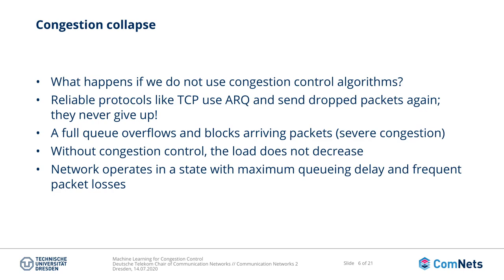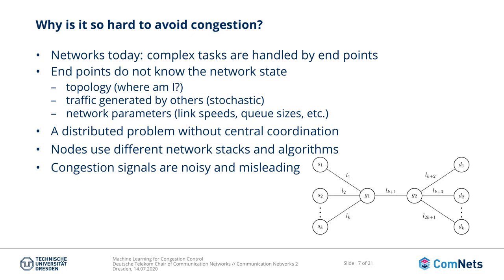But why is it actually so hard to avoid congestion in the first place? In today's networks, the complex tasks are handled by the endpoints. Most commonly a congestion control algorithm is implemented inside source nodes, and they control the sending rate. But a source node has very little knowledge about the network state — it does not know the topology it is embedded in, has no idea about the traffic generated by other source nodes that might flow through the same bottleneck, and does not know any network parameters such as link speeds or queue sizes. So we are looking at a distributed problem with no central coordination. The source nodes also have freedom of choice — they have their own network stacks and can implement their own congestion control algorithms that do not have to be the same.